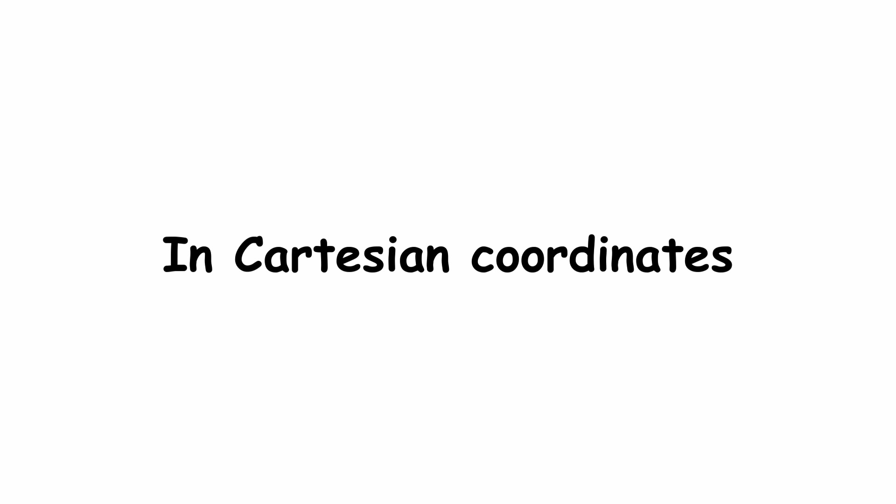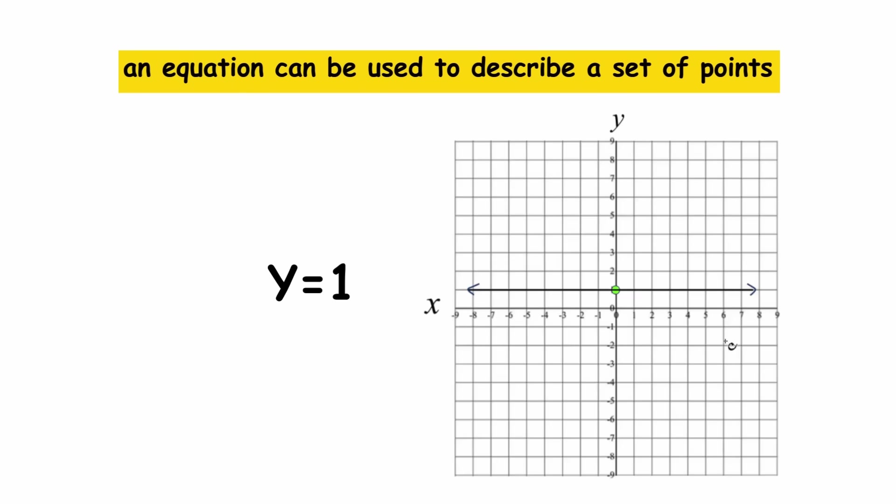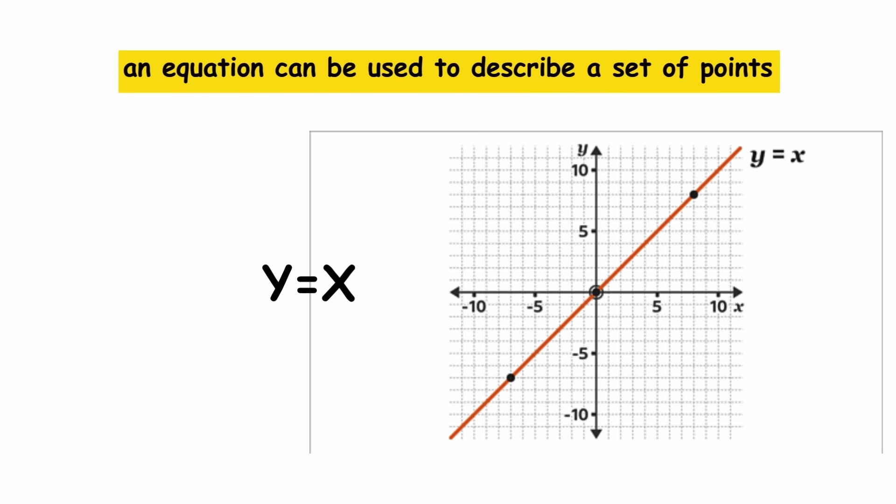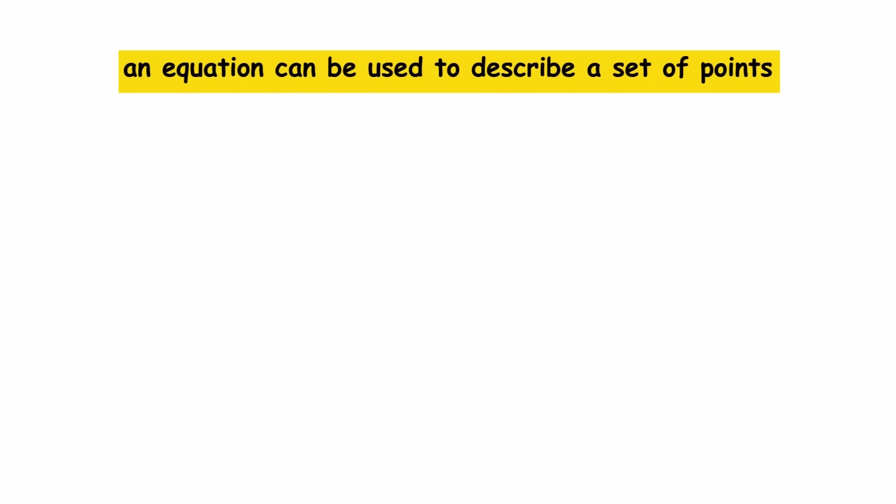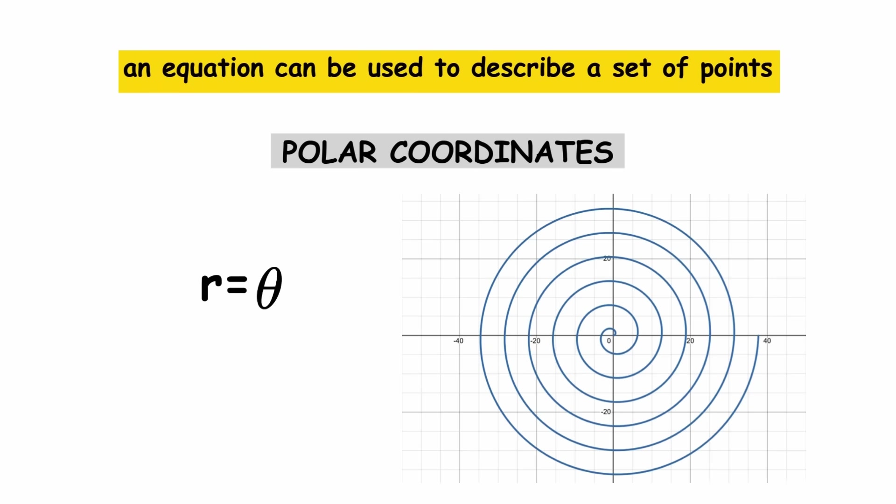In Cartesian coordinates, an equation can be used to describe a set of points, like y equals 1 or y equals x. Similar equations are possible in polar coordinates, like r equals 1 or r equals theta. Let's examine another example, r equals 2 to the power of theta, generating a spiral shape.